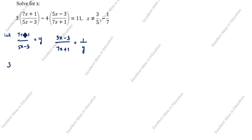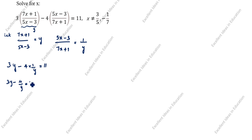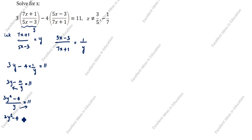Substituting, we write 3y minus 4 times (1/y) equals 11. This gives us (3y² - 4)/y = 11. Cross-multiplying: 3y² - 4 = 11y, so 3y² - 11y - 4 = 0.